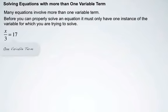So x over 3 equals 17. This is a one variable term because there's only one term that has an x involved. Negative 2 times negative x equals 102. Another one variable term. Only one of the terms involves x.